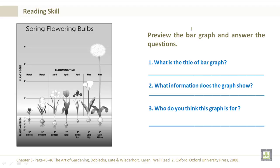Preview the bar graph and answer the questions. The bar graph is to your left. What is the title of the bar graph? That would be Spring Flowering Bulbs.